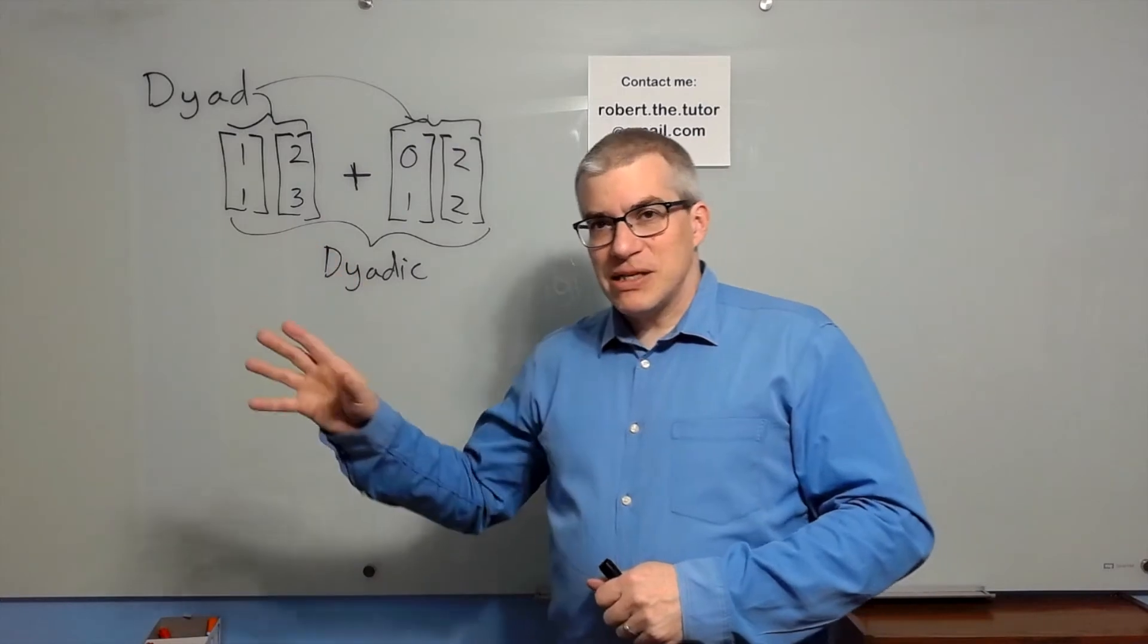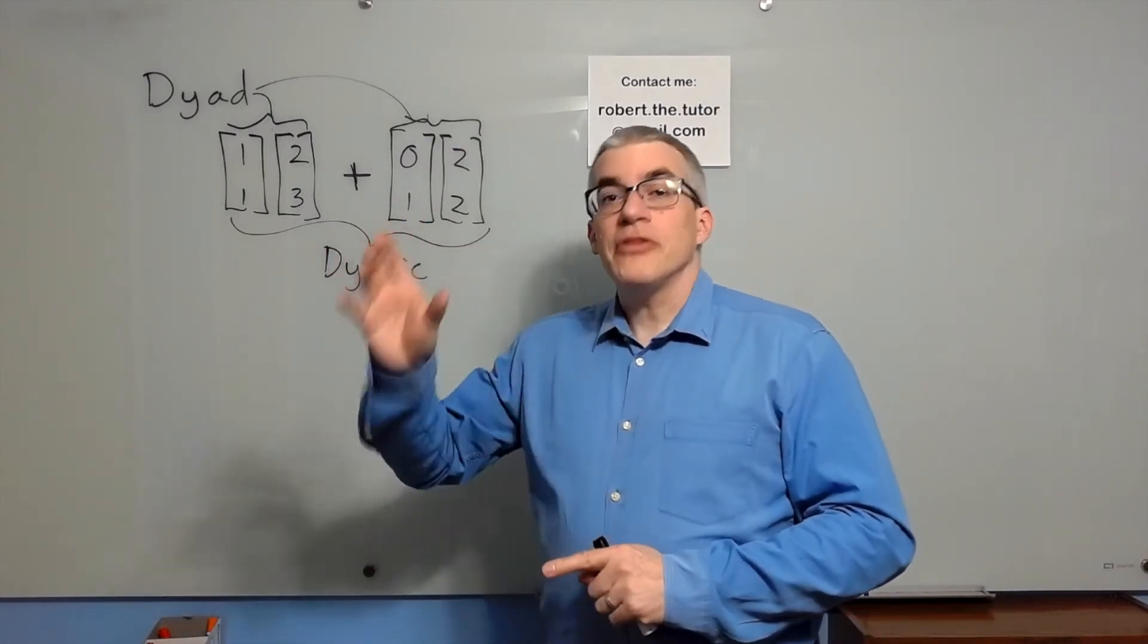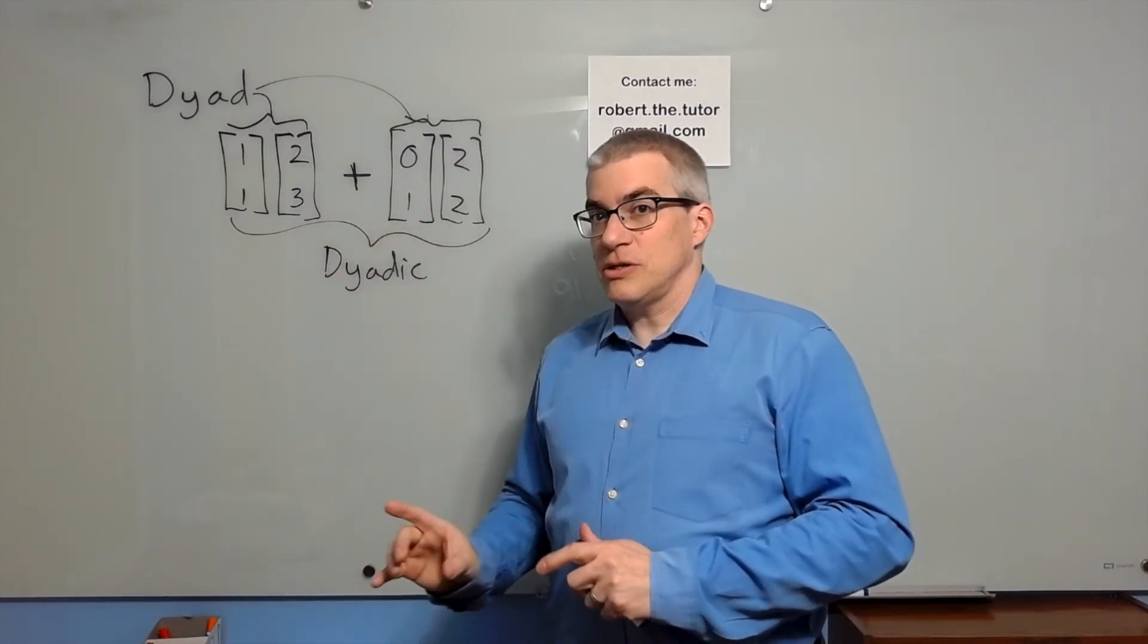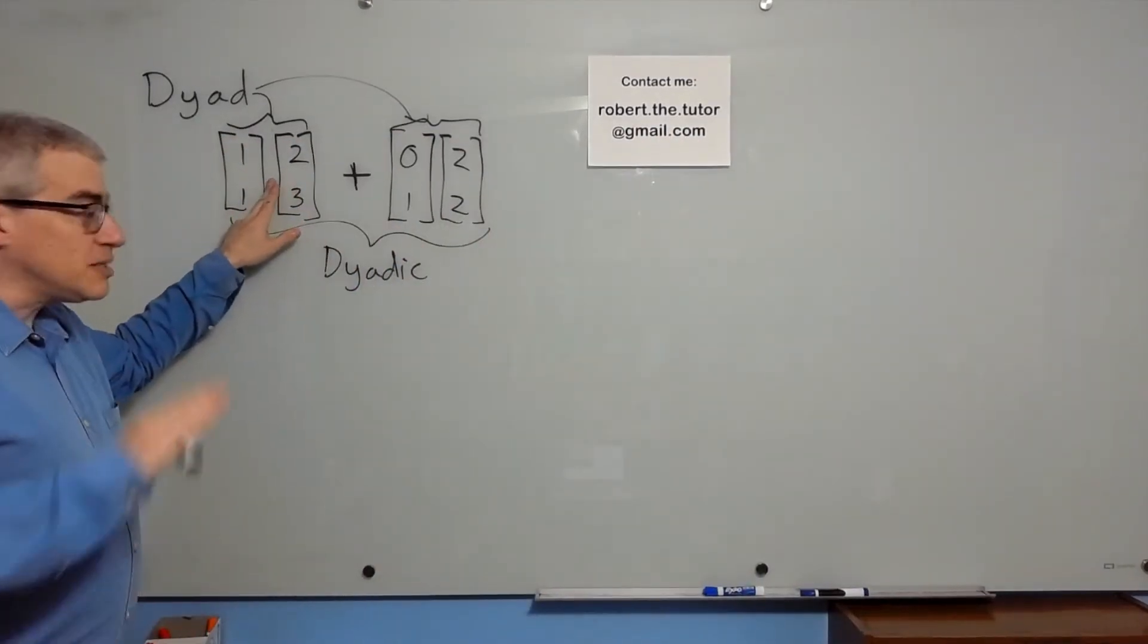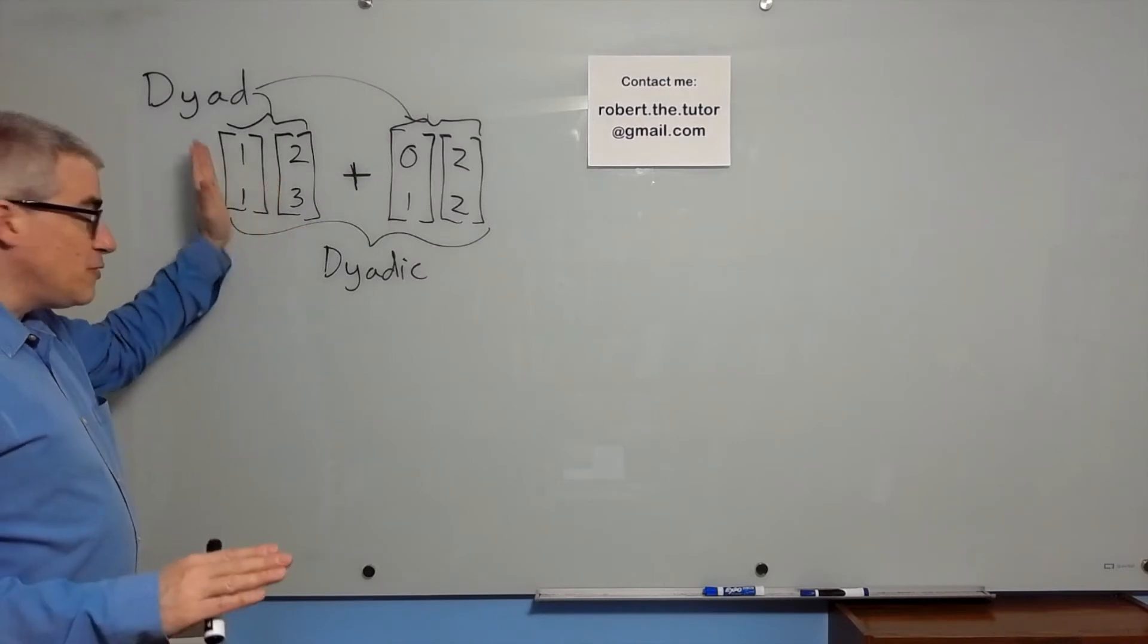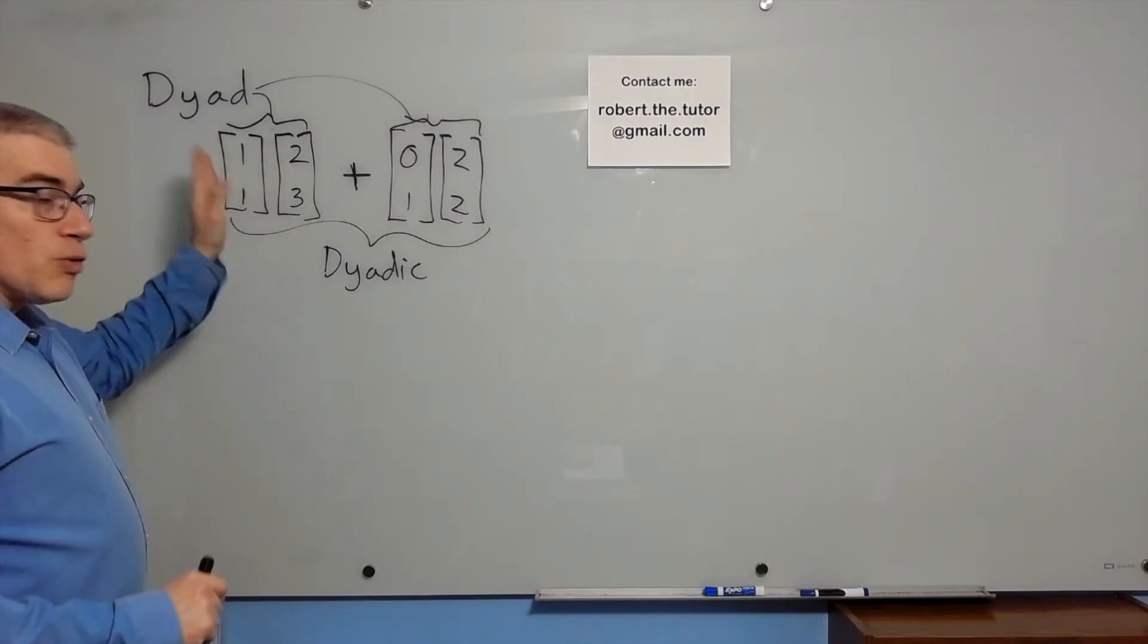A dyad is basically a vector that has another vector as its coefficient. So you just write two vectors side by side. This is not a dot product. This is not a cross product. It's just two vectors side by side. And the order matters.